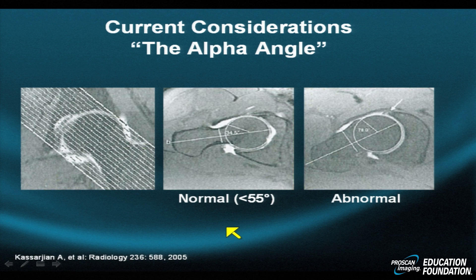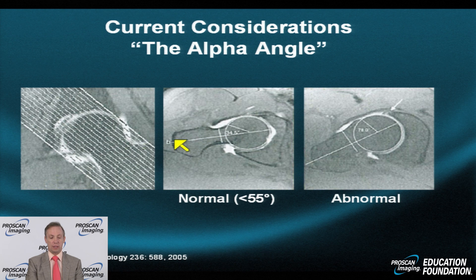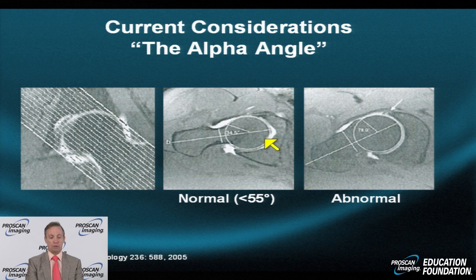One measurement used to assess the bump and the risk for FAI is the alpha angle. An oblique long-axis axial is created so that a line along the long axis, from the greater trochanter splitting the femoral head, is combined with a line drawn from the center of the spherical femoral head to the transition point between the head and the neck. There is some subjectivity in this measurement.